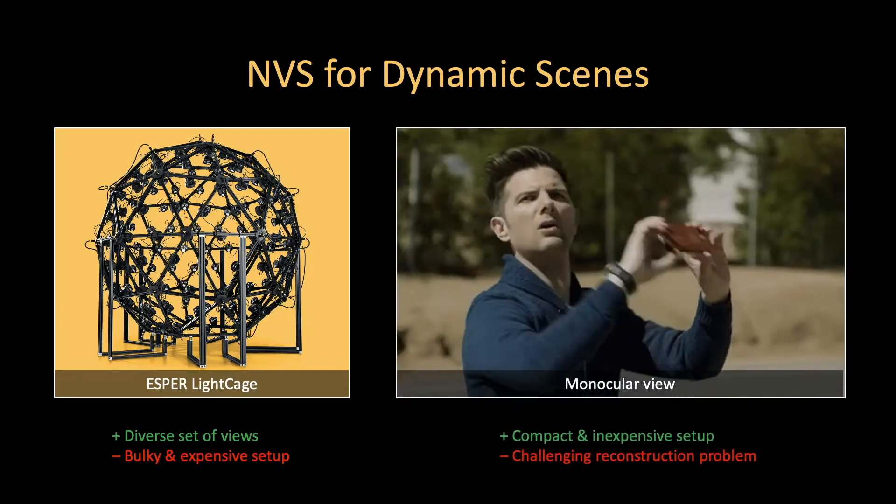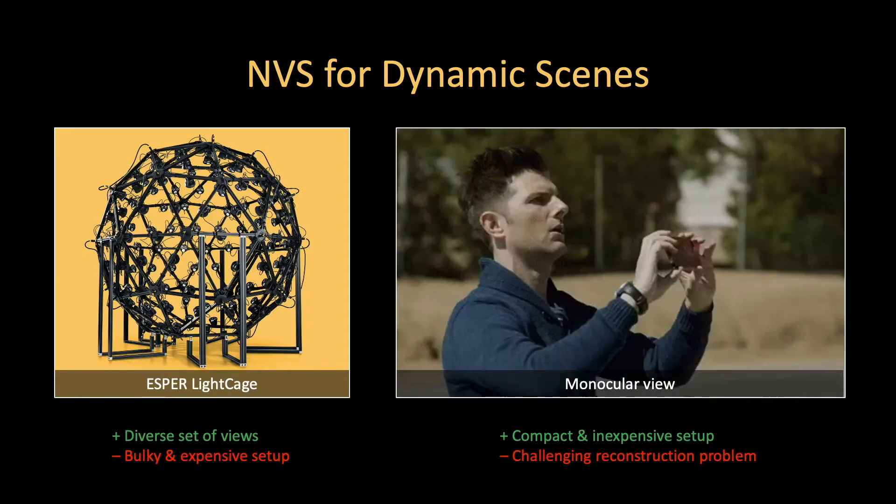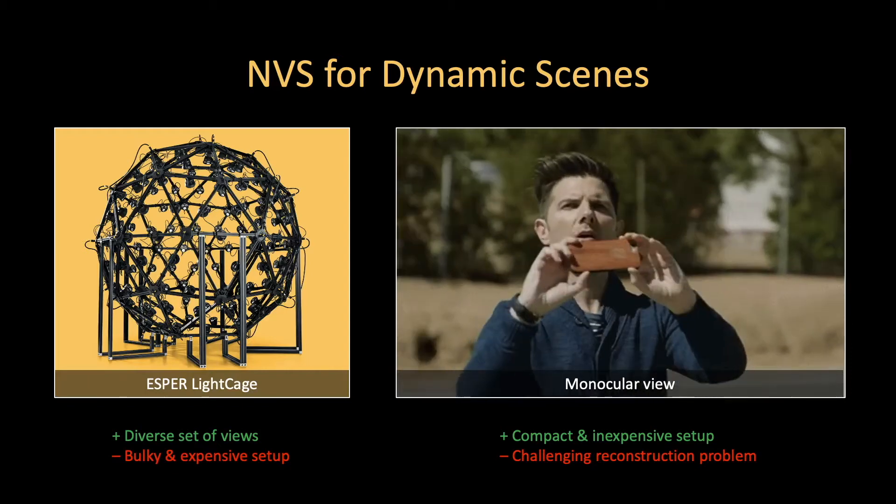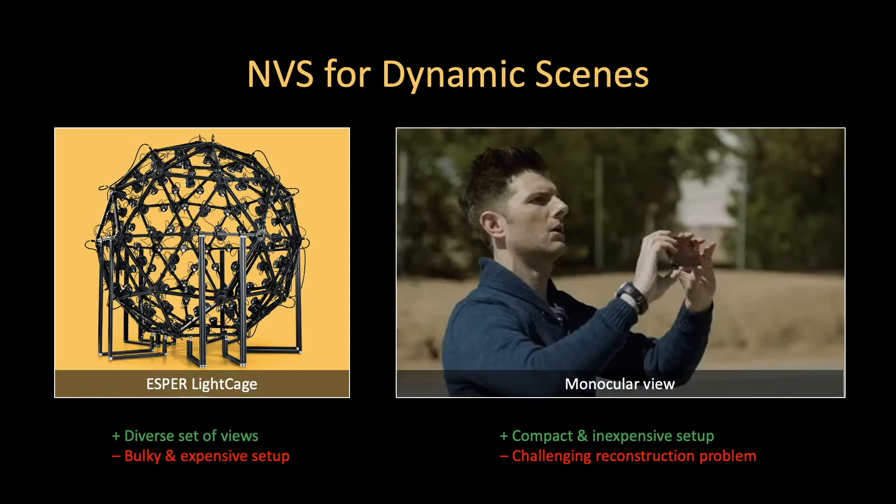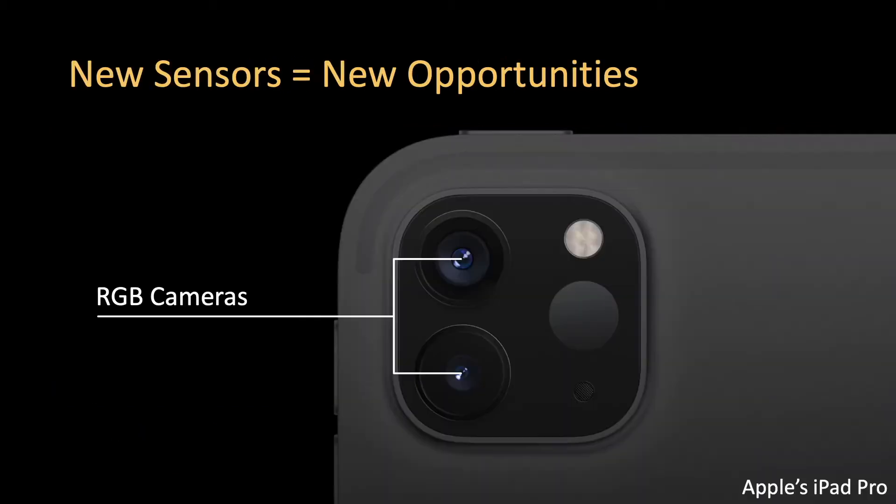The second approach is to work with the data captured from accessible handheld cameras. However, this means that we must solve a more challenging reconstruction problem, which often requires making use of priors for the scene's geometry and object motion. In this work, we instead propose a third approach.